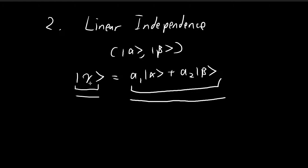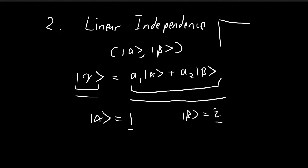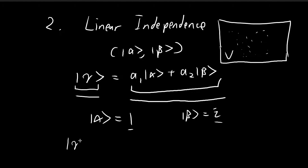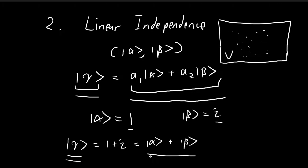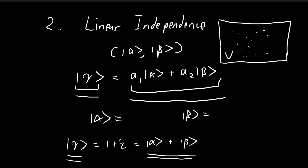This sounds very abstract, so let's explain it with an example. Let's say alpha is equal to 1 and beta is equal to i. These are vectors from the vector space v, which contains all possible complex numbers. If we have another vector gamma equal to 1 plus i, we can obviously express this as alpha plus beta — that is, gamma is a linear combination of alpha and beta. So in this case, gamma is linearly dependent on alpha and beta.